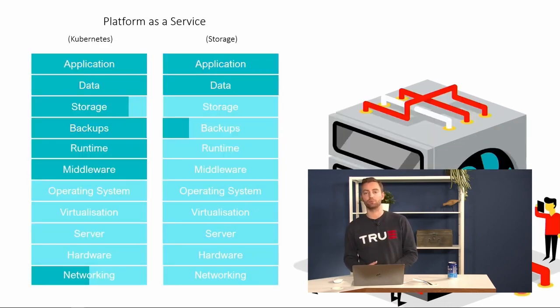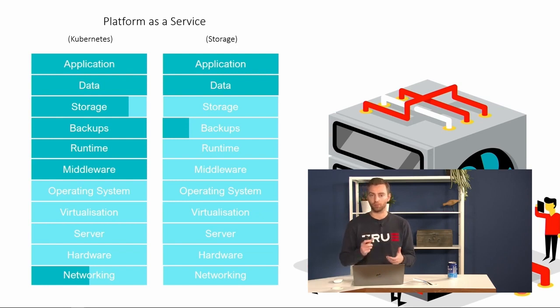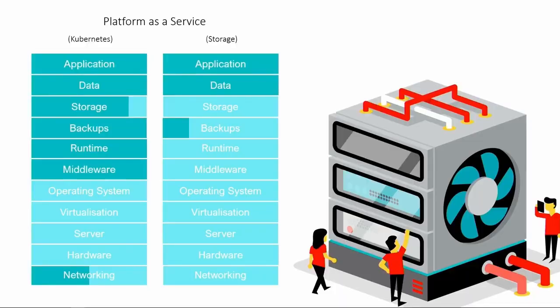The next stage is platform as a service, which has a very wide variety of services you can consume — you can consume Kubernetes as a service or storage as a service. Both come in different versions with completely different separations of concern about what you need to manage versus what they manage for you. When using Kubernetes as a platform as a service, you're still responsible for the runtime and the middleware because you need to store and build them within your container. If you don't do that correctly, you won't get the benefits of that platform and it will work against you.